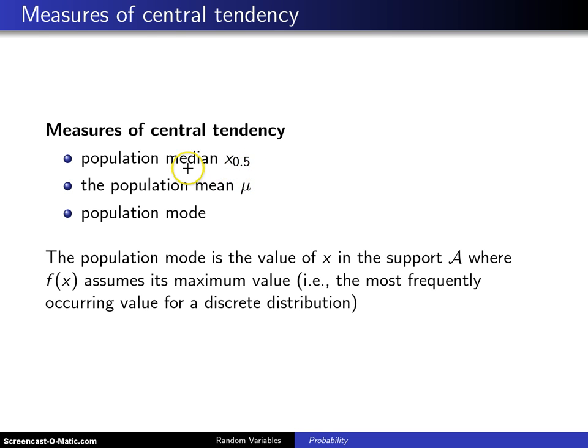Economists, for example, sometimes prefer to work with the population median instead of the population mean because a lot of the distributions that they work with have very long right-hand tails. If you look, for example, at the annual income for an individual, there are some people that have huge annual incomes, and those will skew the population mean, but they will not skew the population median.